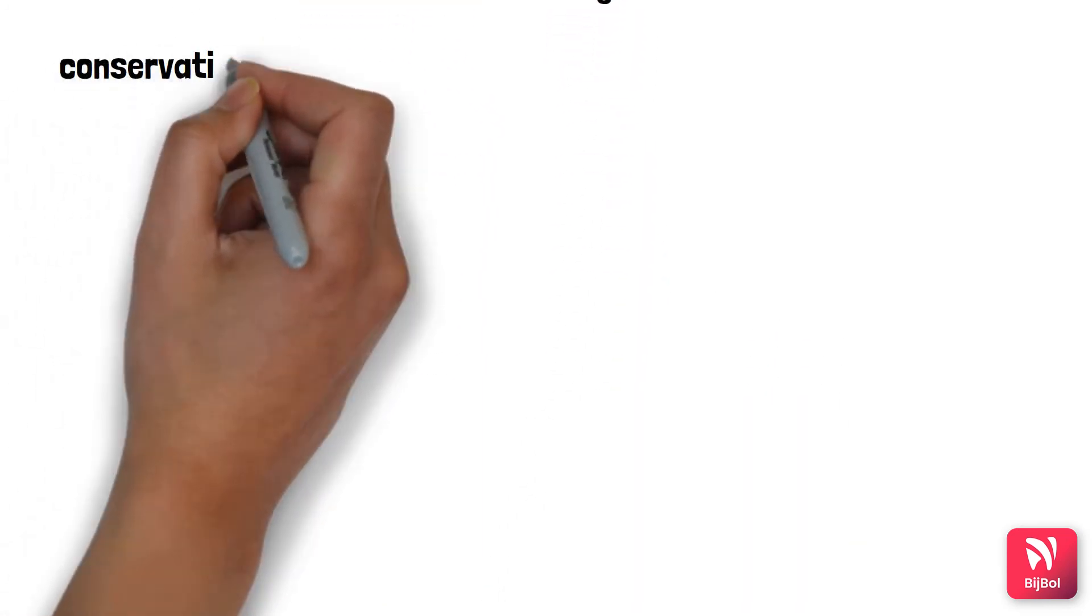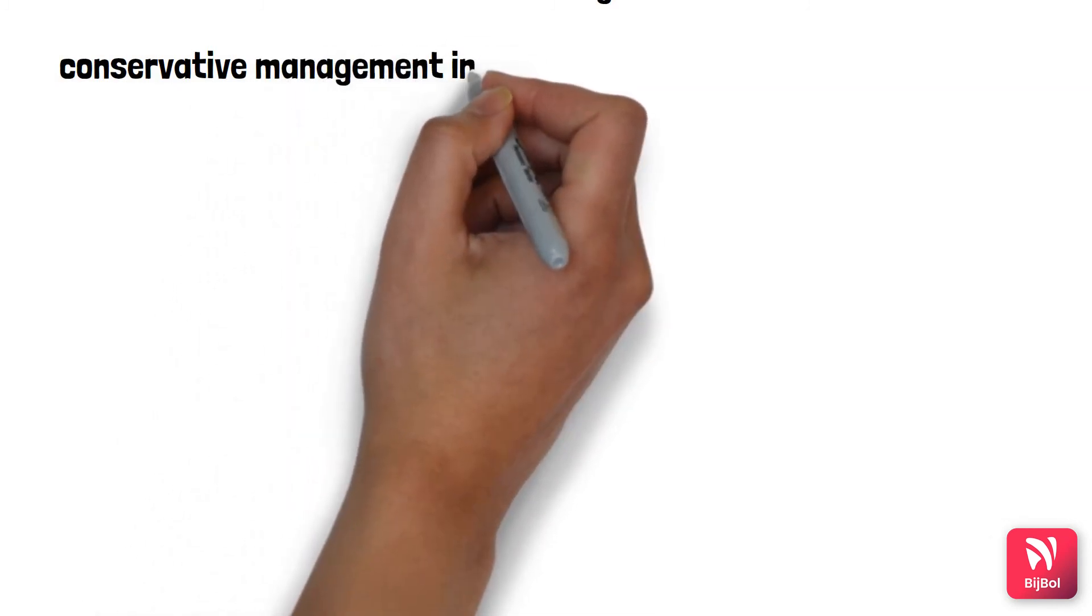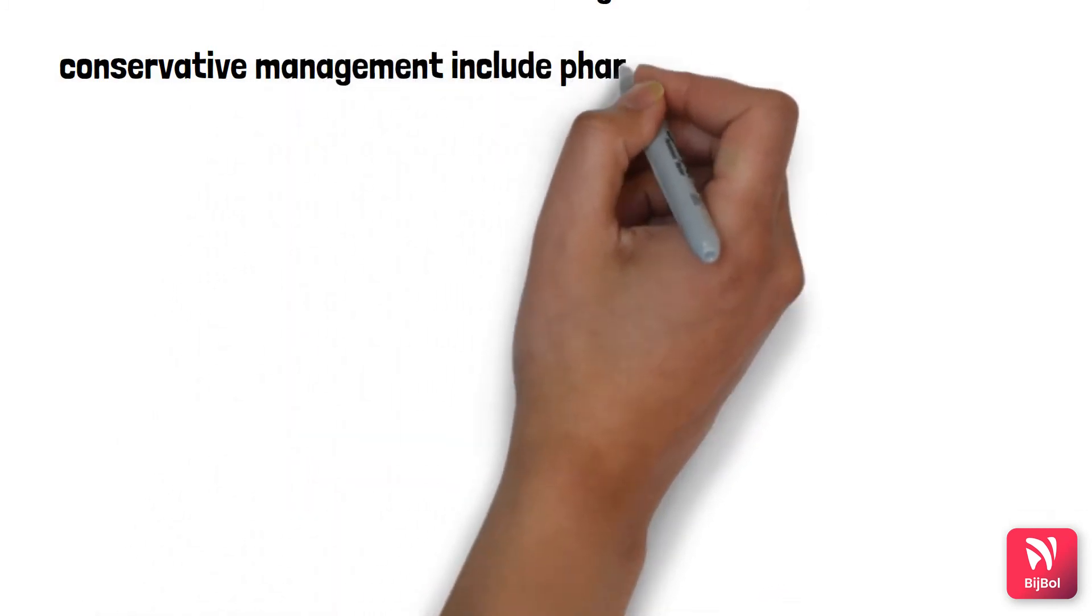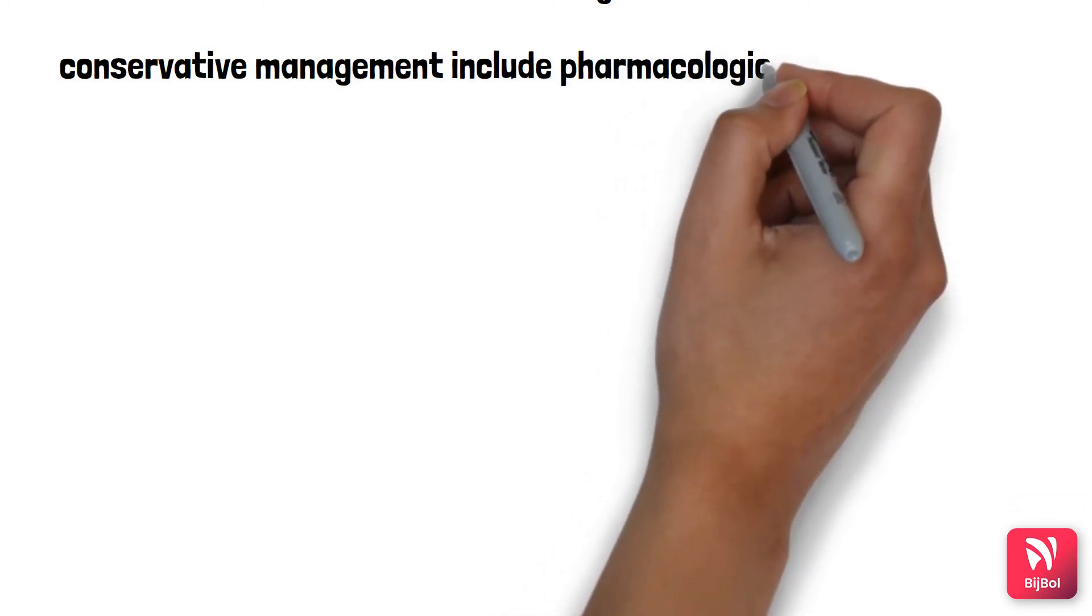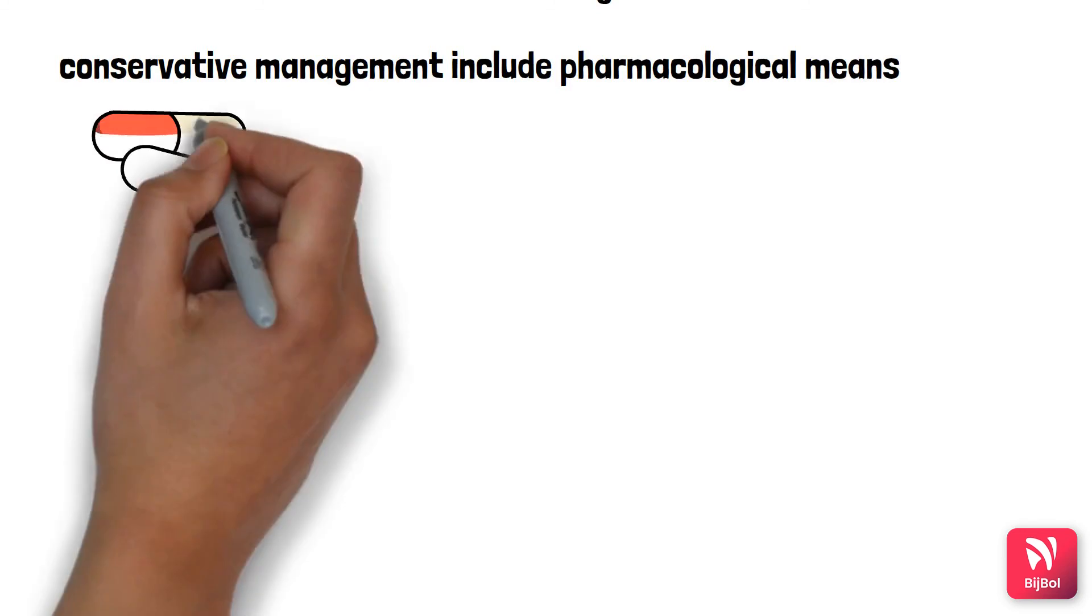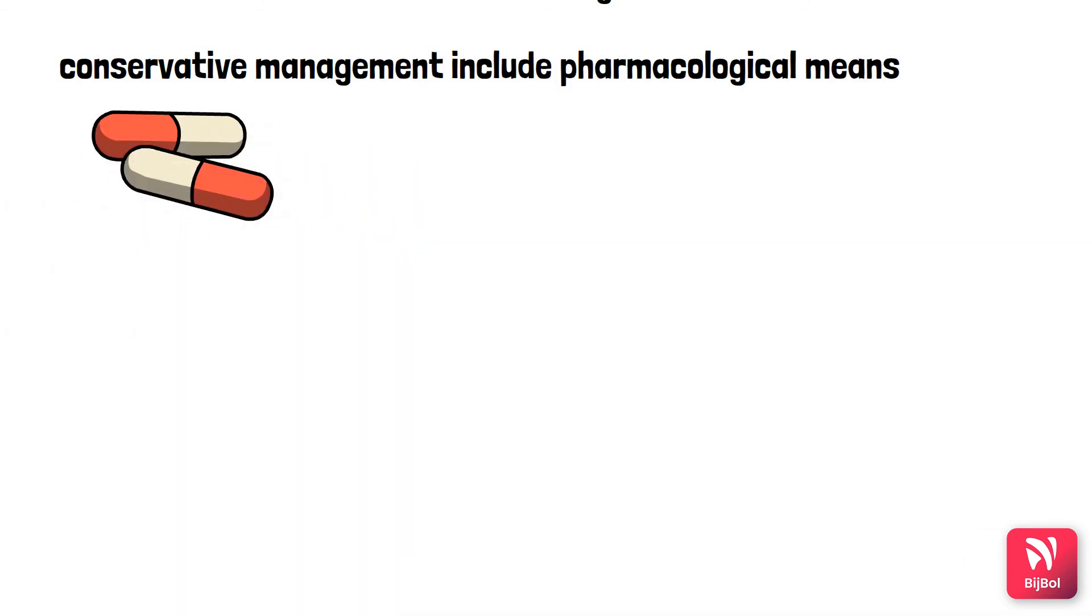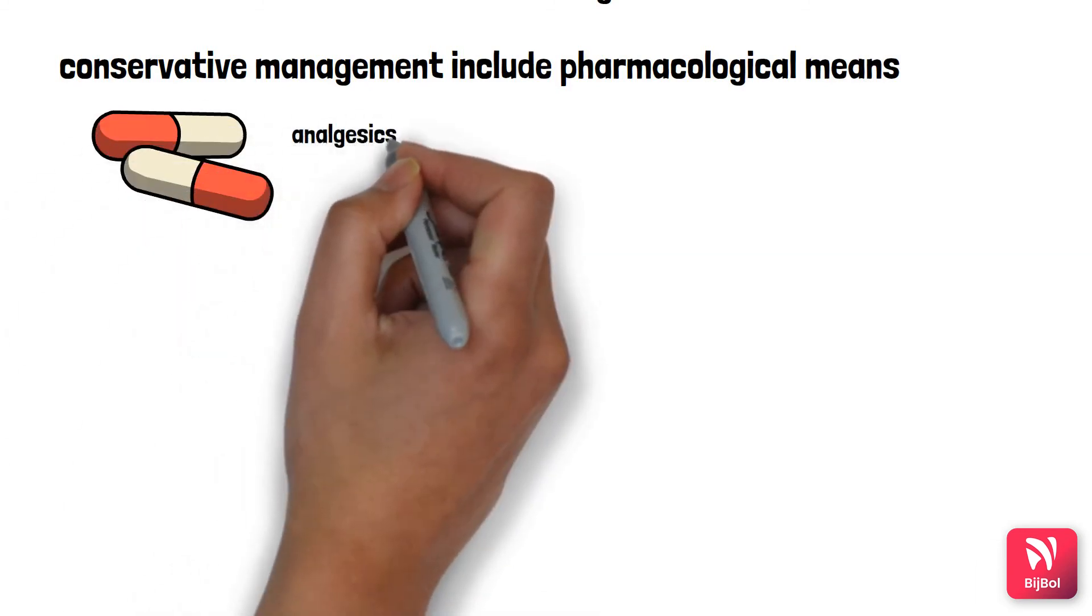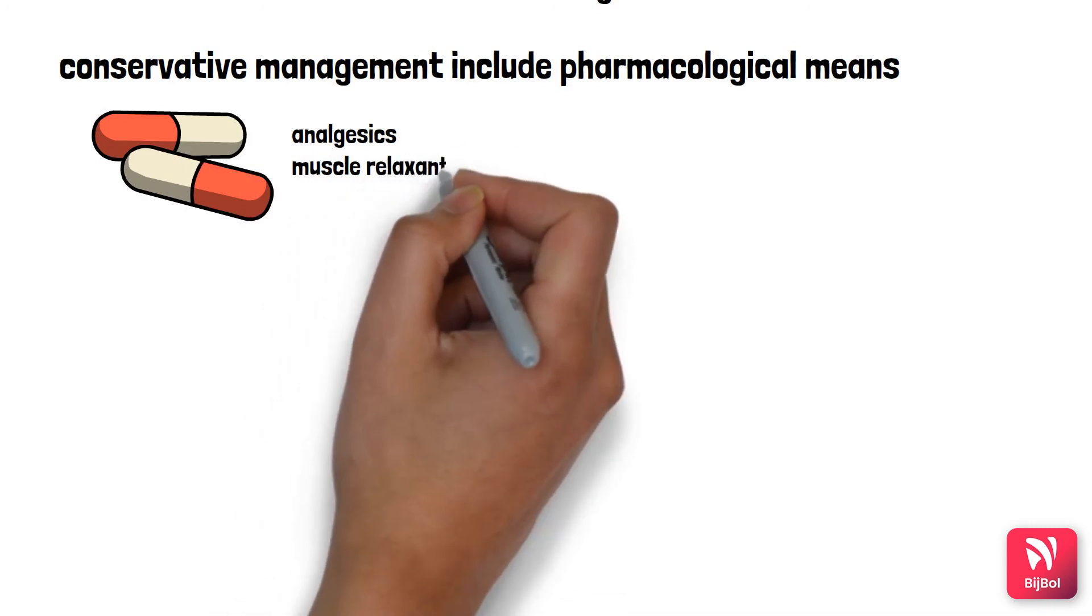to reduce stress, anxiety, and pain. If there's muscle fatigue, we give muscle relaxants. Analgesics and anti-anxiety drugs are the most commonly used pharmacological means. The surgical management of MPDS usually